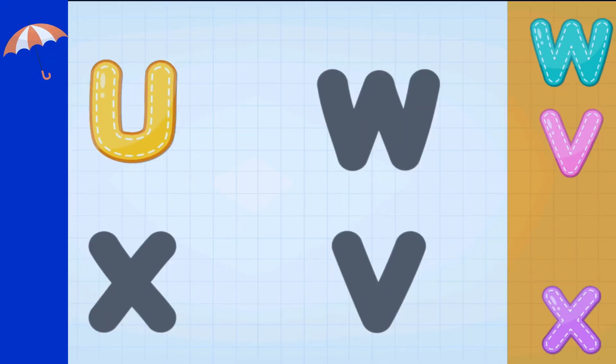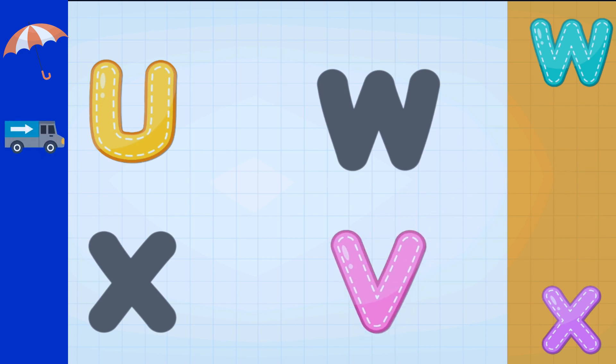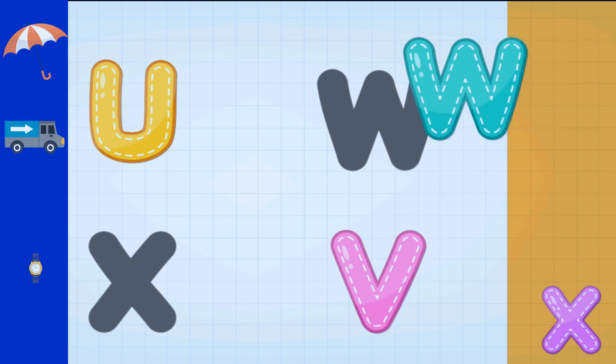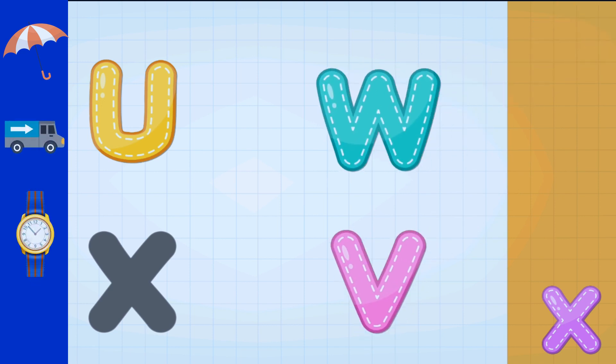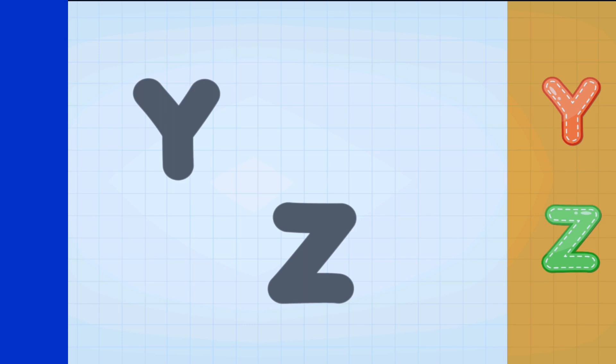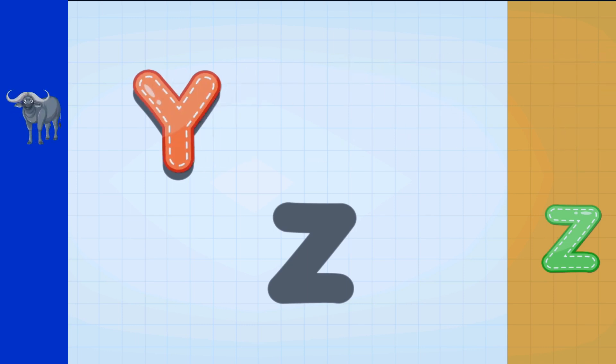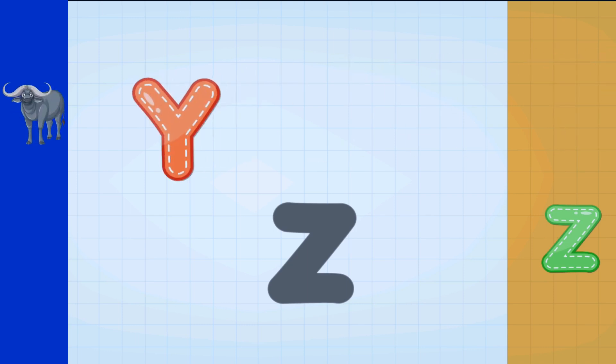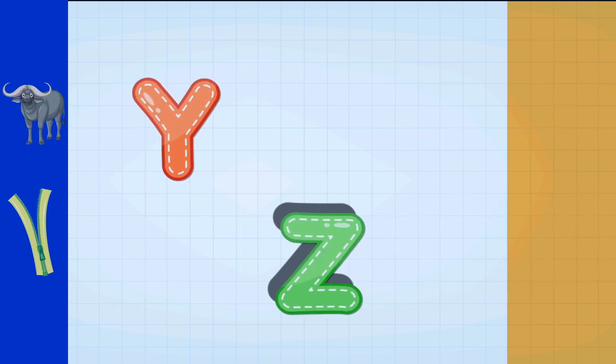U for Umbrella, V for Van, W for Watch, X for Xylophone, Y for Yak, Z for Zip.